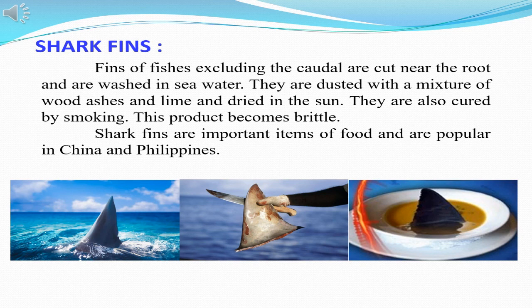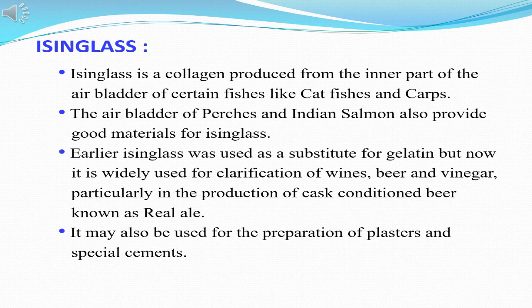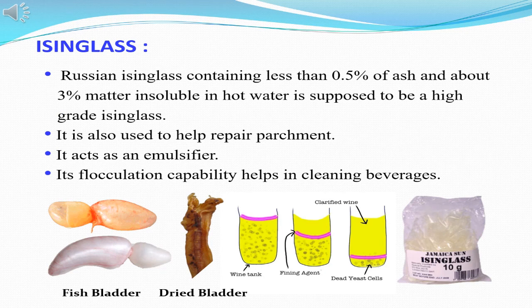Shark fins are used as food and are very popular in China and the Philippines. They are cut near the root, washed in sea water, dusted with a mixture of wood ashes and lime, and dried in the sun. Isinglass is a collagen produced from the inner part of the air bladder of certain fishes like catfishes, perches and Indian salmon. Earlier isinglass was a substitute for gelatin, but now it is widely used for the clarification of wines, beer and vinegar. Russian isinglass is supposed to be the best, and it acts as an emulsifier; its flocculation capability helps in cleaning beverages.